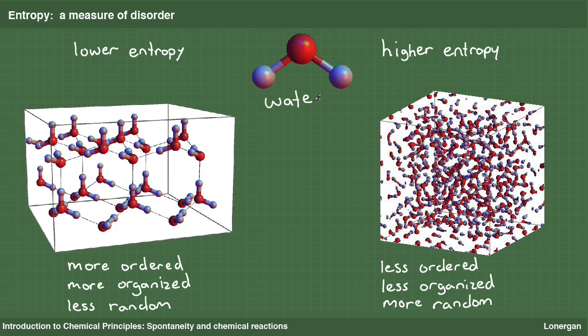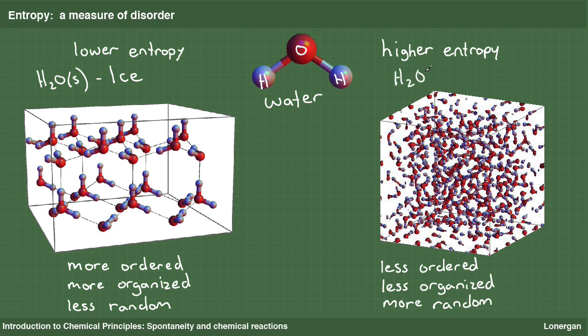The phases of water provide a more chemical example. The water molecules in ice form a well-ordered crystal. The water molecules vibrate a little about their positions but do not move freely throughout the crystal. The molecules in steam, on the other hand, are not well-ordered — they move around randomly through space. The water in ice is in a state of lower entropy than the water in steam.